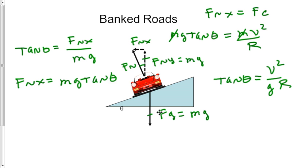And generally we're trying to find the angle that we have to bank the road so that no friction is required to keep the car going around the circle.